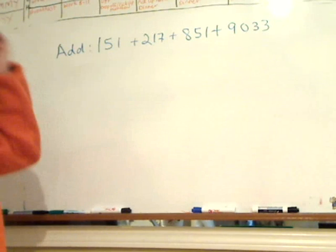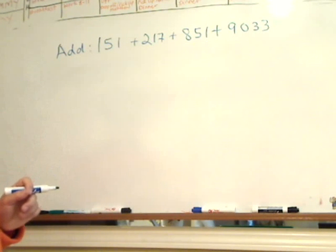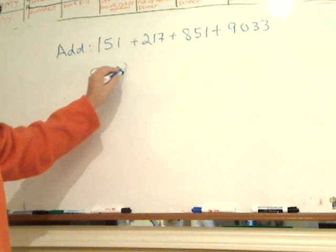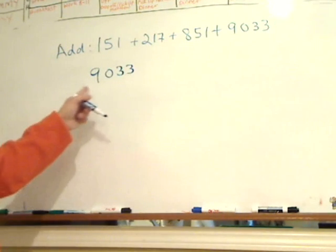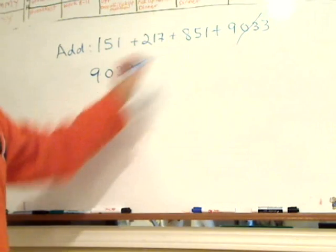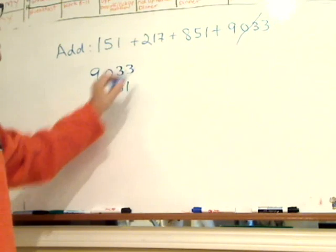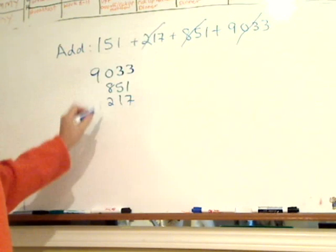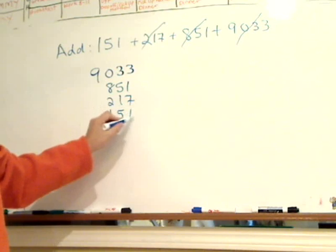Okay, so let's take it up. Remember I told you, it's probably better if you start from the biggest number to the smallest number. So here we have 9033, and the next biggest number is 851, the next biggest number is 217, and the next biggest number is 151.